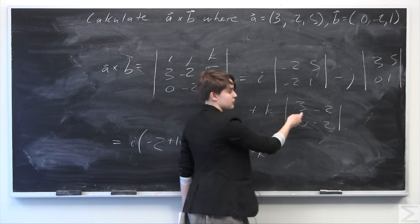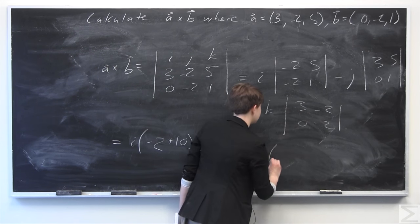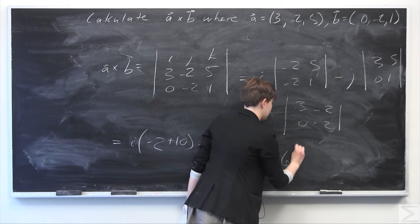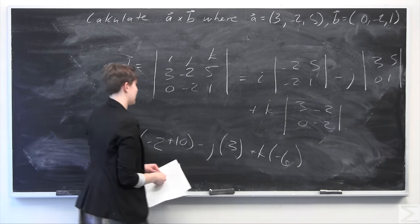Plus k times 3 times -2 is going to be -6. Minus 0 times -2 is going to be 0, so I'll just leave that as is.